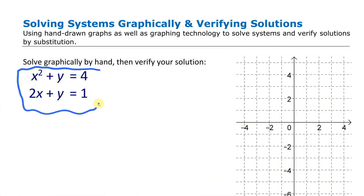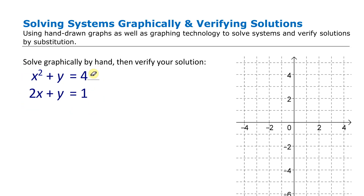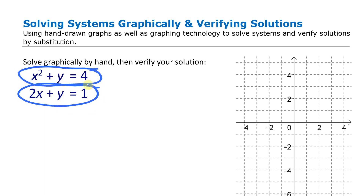To solve this system we are going to create a hand-drawn graph of both functions and then see if we can identify the intersection points. We have a quadratic function and a linear function.